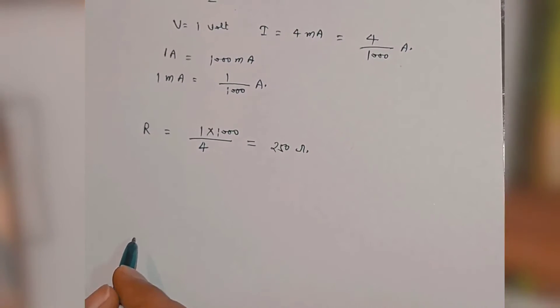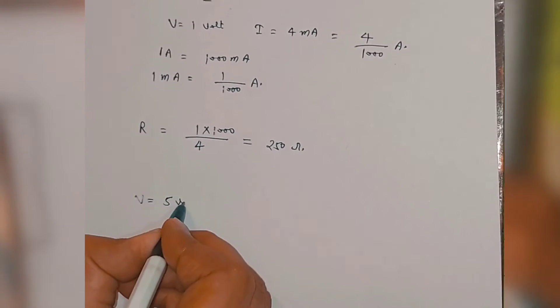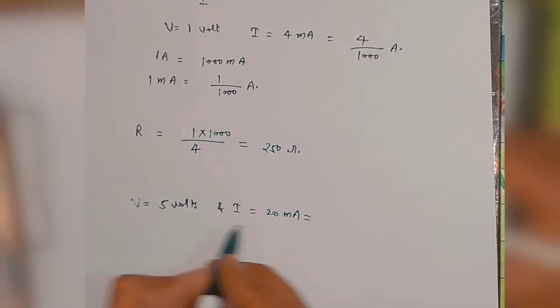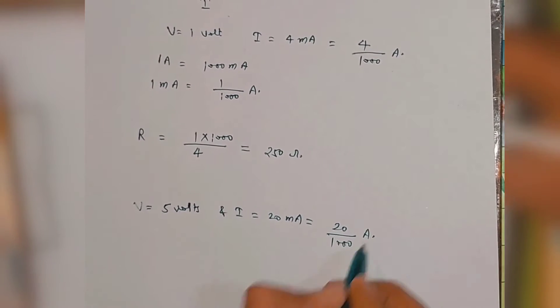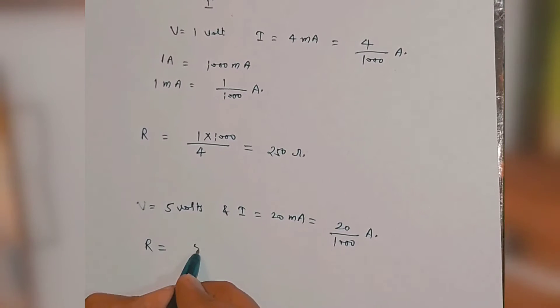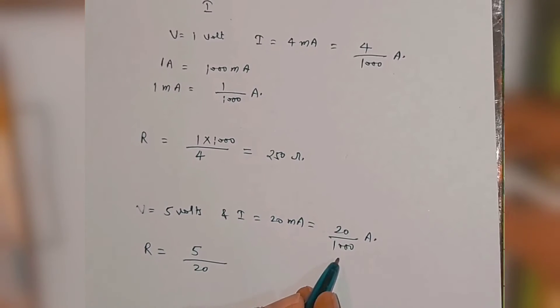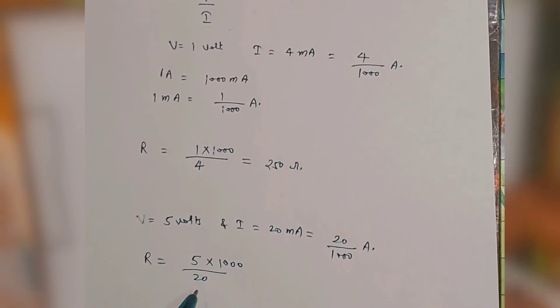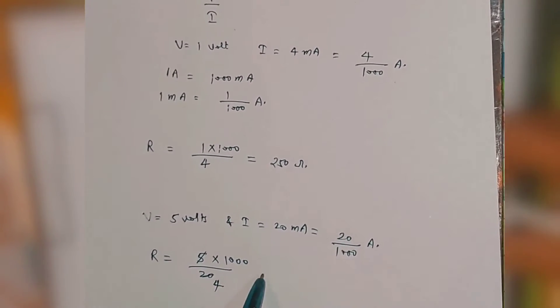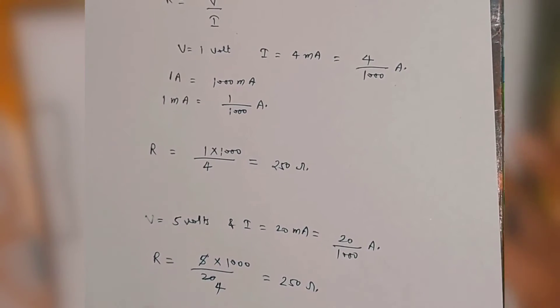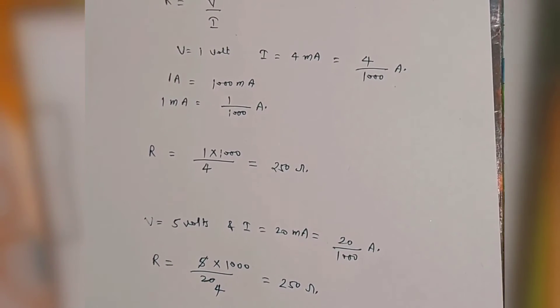Let's also verify R at 5 volts and 20 milliampere. V is 5 volts and I is 20 milliampere, which we write as 20 divided by 1000 amperes. R equals V divided by I equals 5 divided by (20/1000). The 1000 goes to the numerator, and 20 divides into 5000 giving 250 ohms. So now it is clear why the value of R is 250 ohms.